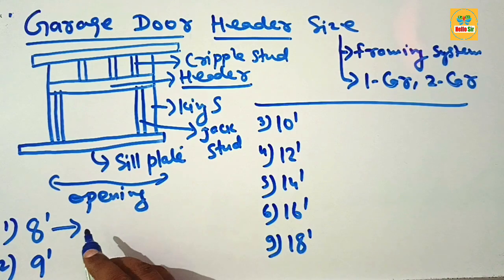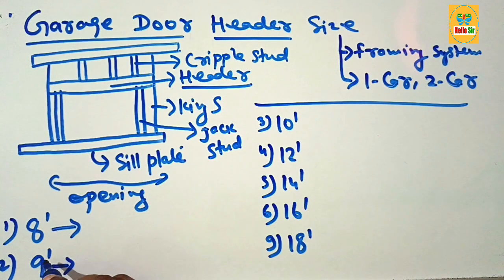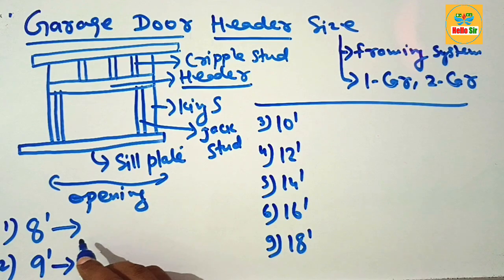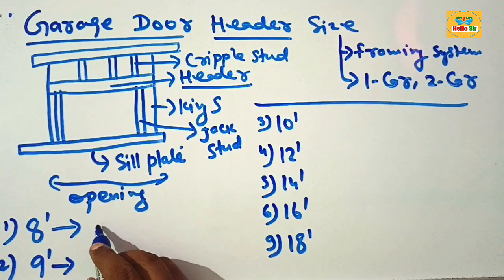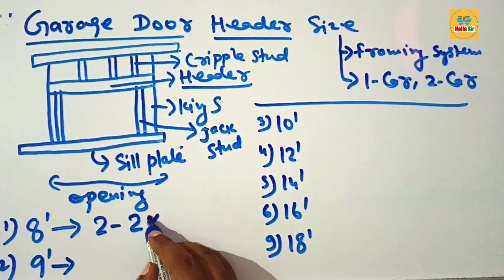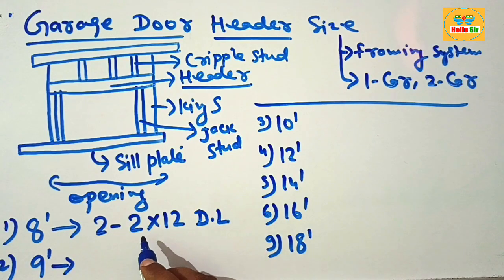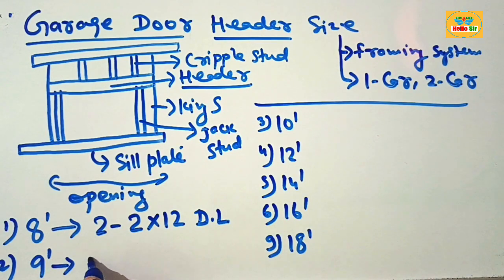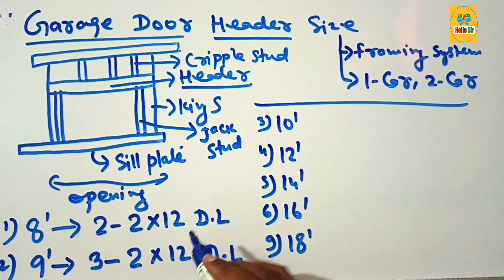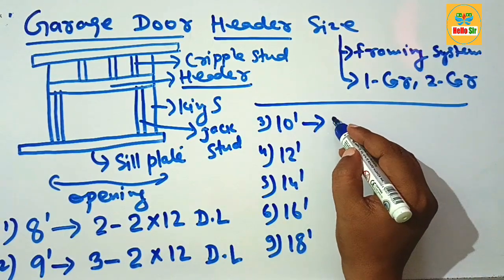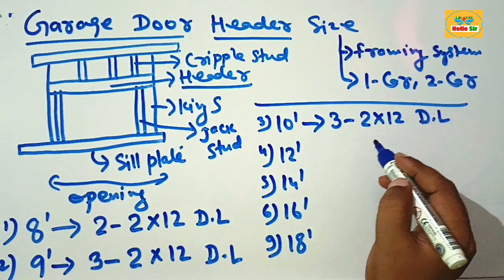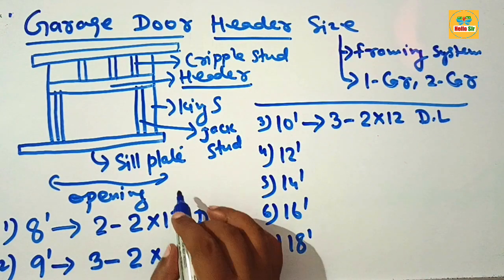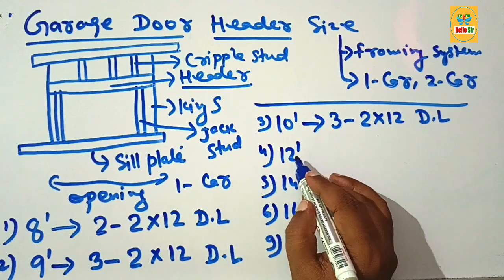If the door opening of the garage is 8 foot, what will be the header size? For a single car garage door with an 8-foot wide opening, you should use 2 pieces of 2x12 dimensional lumber as the header. For a 9-foot opening, you should use 3 pieces of 2x12 dimensional lumber, and for a 10-foot wide opening, you should also use 3 pieces of 2x12 dimensional lumber as the header.